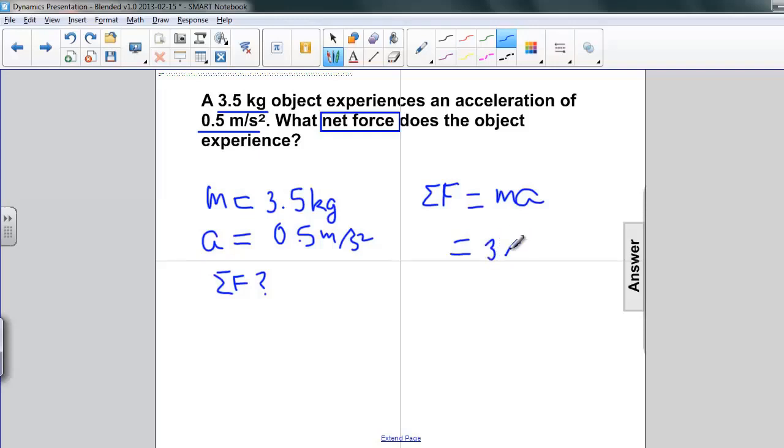We have 3.5 kilograms for the mass and 0.5 meters per second squared for the acceleration. And if we multiply these, we get 1.75 kilogram meters per second squared.